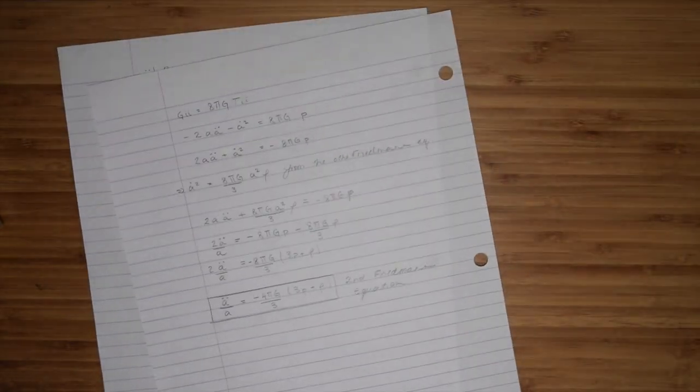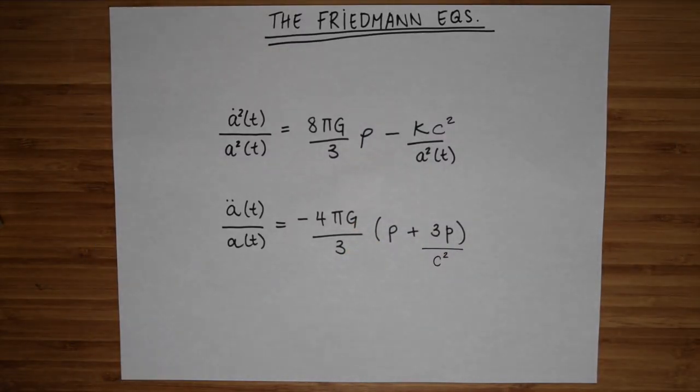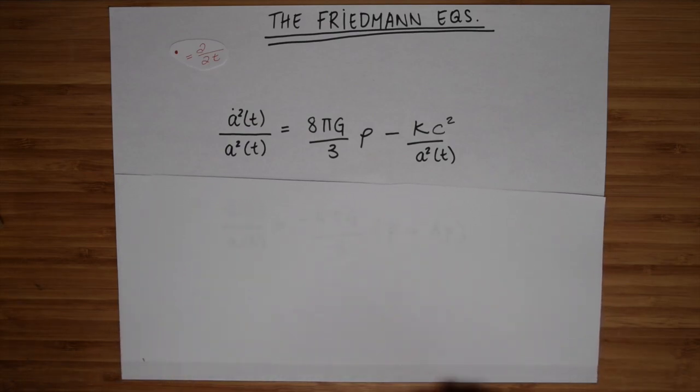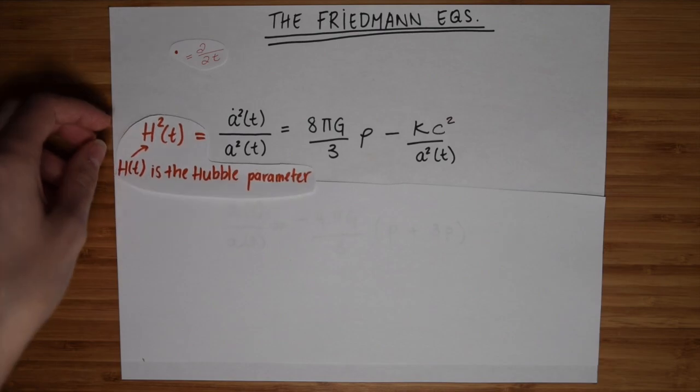This takes a little bit of work, but once you do the math, we get these two equations, the Friedman equations, where the dot here denotes a time derivative. Today, we're going to focus on the first one, which is often just referred to as the Friedman equation, because it's this equation that tells us about the expansion rate of our universe, the expansion rate we call the Hubble parameter.